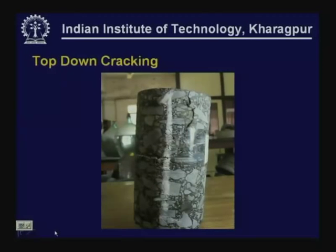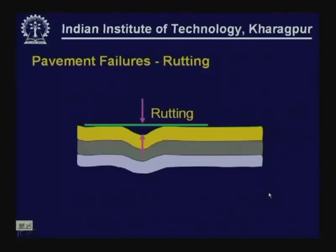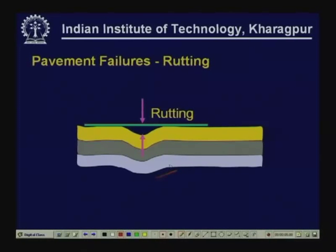These also need to be considered while designing mixes, but a more serious problem encountered in India is rutting. Rutting is caused by permanent deformation in different pavement layers — it can be in the subgrade, granular bases, or in the bituminous layer itself. All or some of these layers can undergo permanent deformation, which gets reflected at the surface in the form of rut depth.